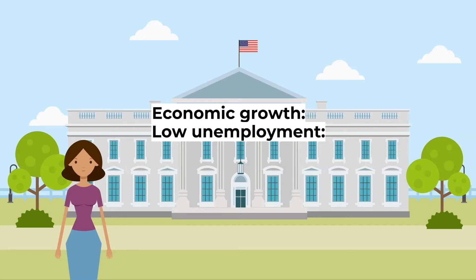The second objective is low unemployment. Governments aim to have as near to full employment as possible. They account for frictional unemployment by aiming for an unemployment rate of around 3%. The labour force should also be employed in productive work.